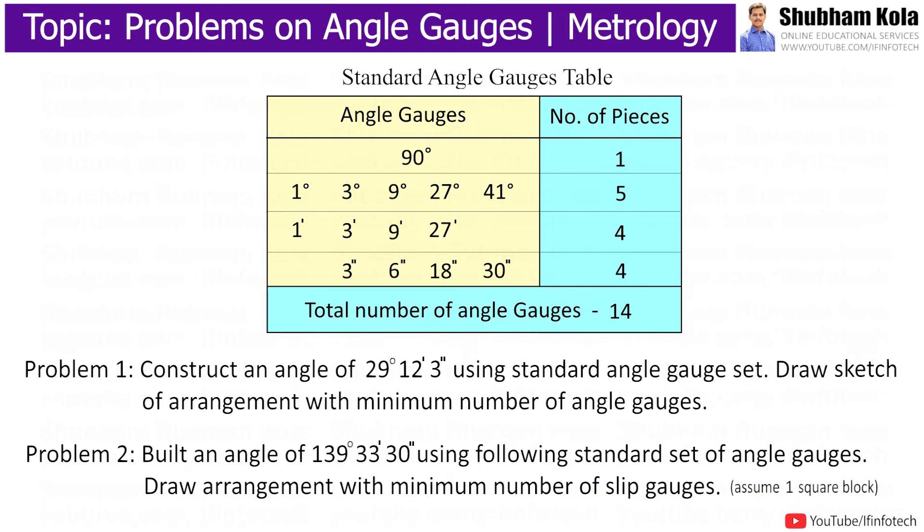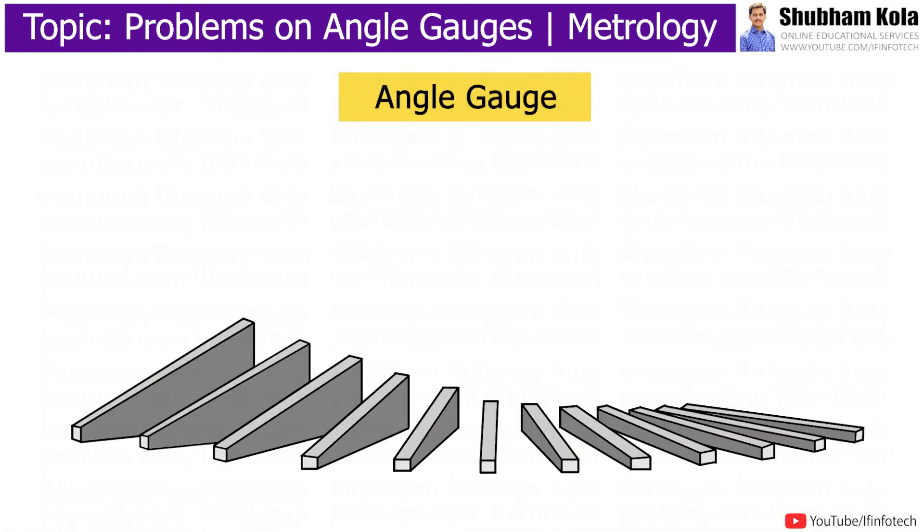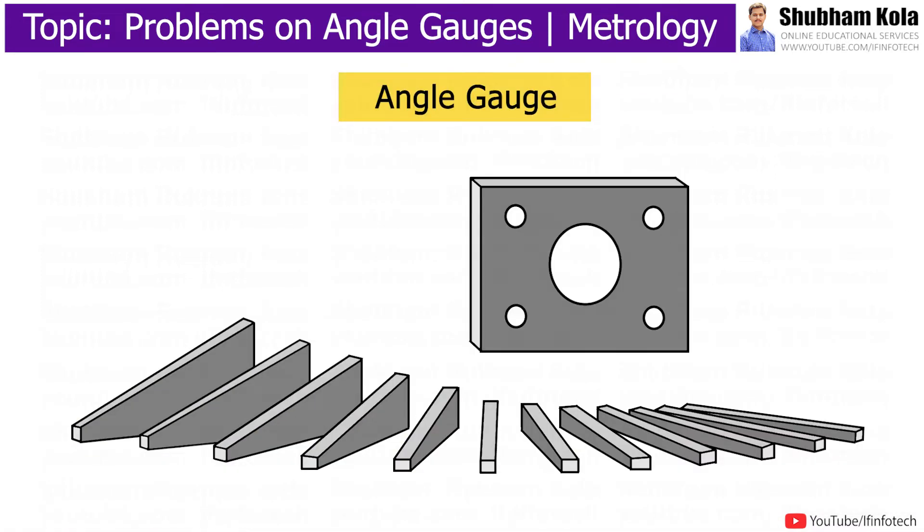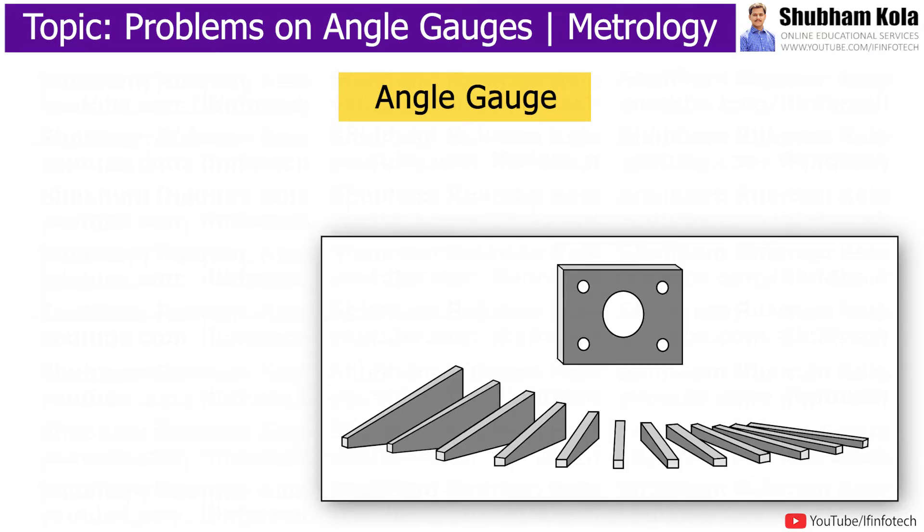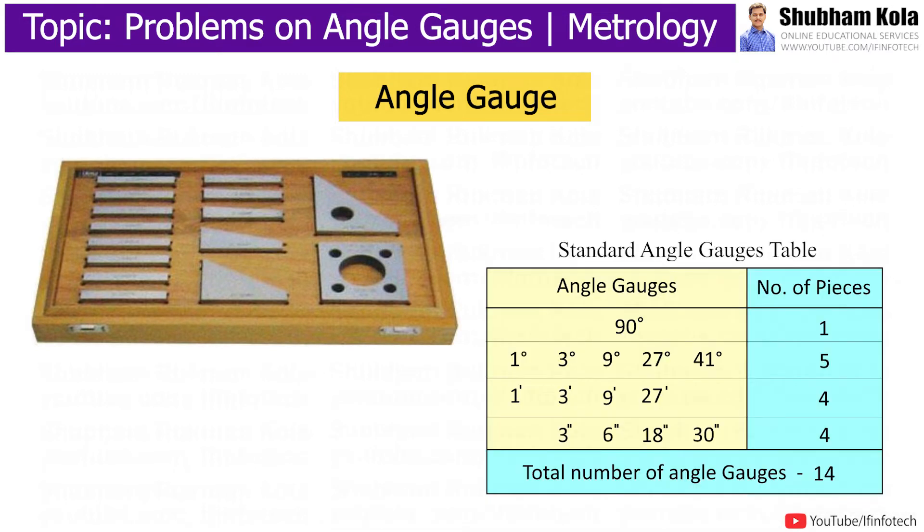In this video, we are going to discuss how to solve problems on angle slip gauges. The angle slip gauge, together with a square block, is used to obtain any angle between 0 to 360 degrees in steps of 6 seconds. These angle gauges are available in standard angle gauge sets, and by using these sets, we can build angles to solve problems.